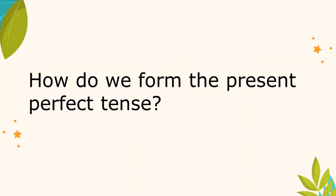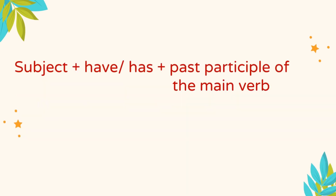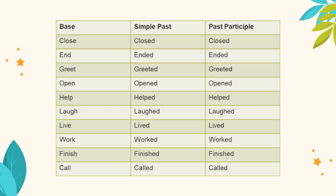How do we form the present perfect tense? We form the present perfect tense in the affirmative like this: subject plus have or has plus the past participle of the main verb. We add the suffix -ed or -d to regular verbs to form the past participle.